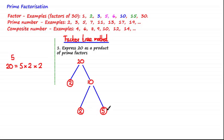And when you multiply these numbers, you get 20. So therefore 20 is equal to 2 times 2 times 5, which can also be written as 2 squared multiplied by 5.